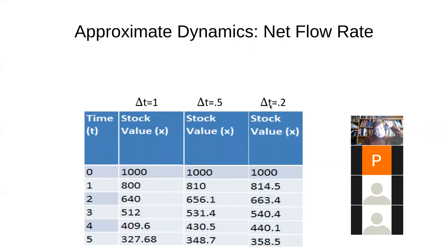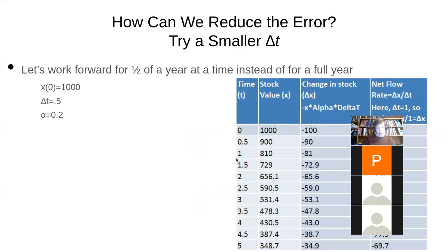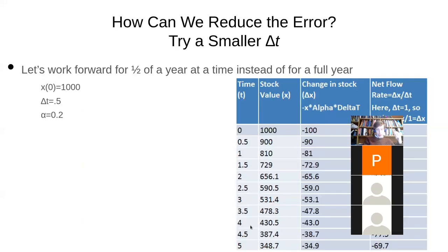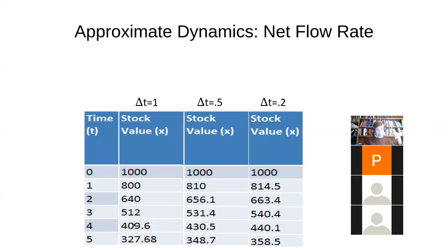How do we go to delta T instead of being 0.5, instead of being one, how do we go to 0.2? Well, we started at 1,000. And I won't show all the intermediate steps, but we go down by time one to 814. It's actually fewer people that die within that first year than we would think because there's fewer people to die in the meantime. And then it goes down to 663. By the time you're four years out, as I said earlier, it's 409 versus 430 versus 440.